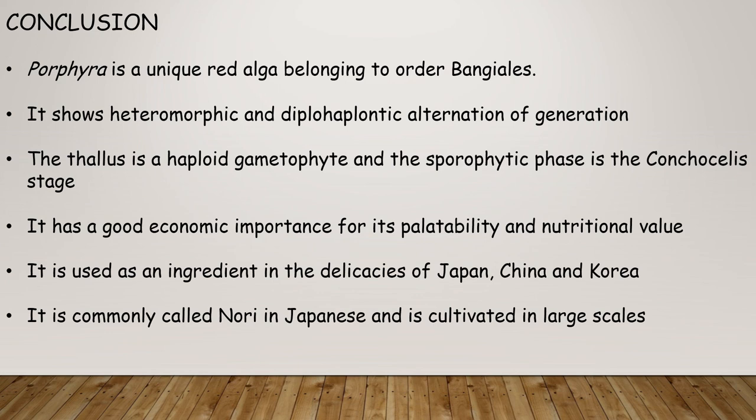Porphyra is a unique red alga belonging to order Bangiales. It shows heteromorphic diplo-haplontic alteration of generations. The thallus is a haploid gametophyte and the sporophytic phase is the conchocelis stage. It has good economic importance for its palatability and nutritional value. It is used as an ingredient in the delicacies of Japan, China, and Korea, and is commonly called nori in Japanese and is cultivated on a large scale.